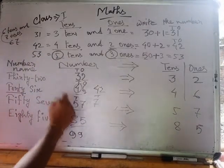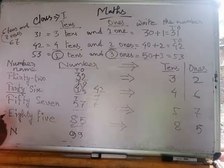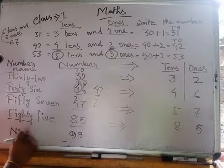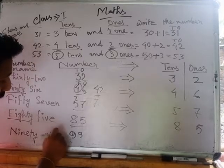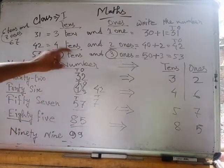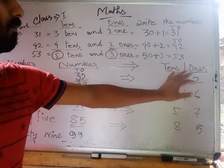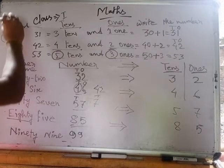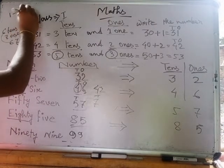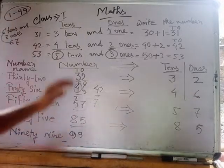If 9 is at the place of tens, that means it is 90. So we have 30, 40, 50, 60, 70, 80, and 90. For 90, we write N-I-N-E-T-Y. That is the number name. That is how we write the number in the place value chart, in tens and ones. I will discuss numbers from 1 to 99. These are your homework — do the examples.